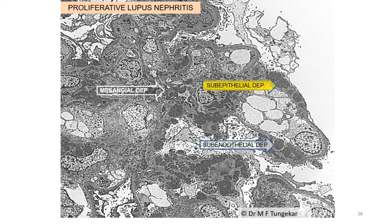Another example of EM being useful or adding to the diagnostic line is lupus nephritis. In proliferative lupus nephritis, the expected deposits are sub-endothelial and mesangial. But if you find in addition sub-epithelial deposits, that raises the possibility of an additional class 5. Proliferative lupus nephritis on its own is either class 3 or class 4, but by light microscopy it is often difficult to be sure of the presence of a membranous component. EM helps by demonstrating sub-epithelial deposits, therefore adding class 5 to the diagnosis as well.